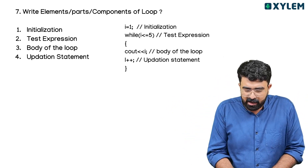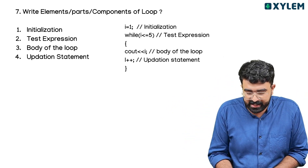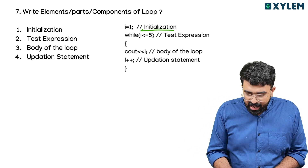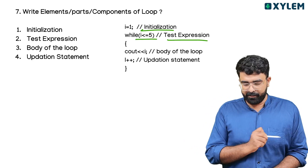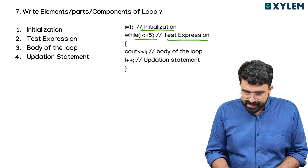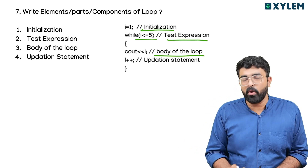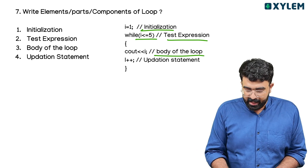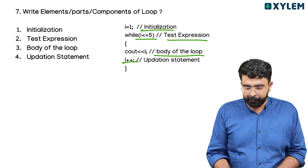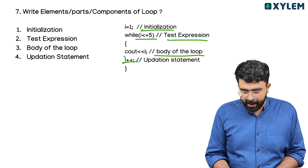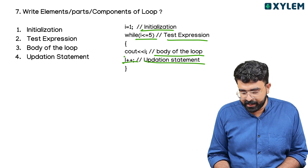Example: i is equal to 1 — initialization. While i is less than or equal to 5 — test expression. cout i — body of loop. Then i plus plus — the update statement.